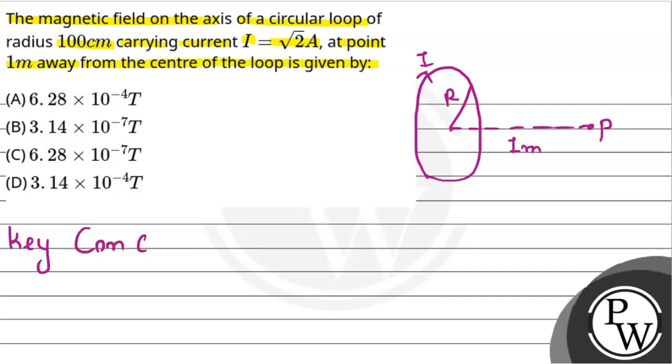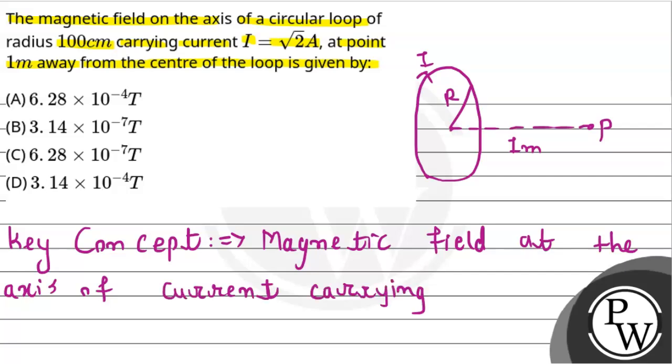But before that, let's talk about the key concept which we are going to use for this question. We need to remember the concept of the magnetic field at the axis of a current carrying circular loop.